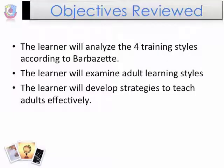Let's review our objectives to verify that we covered all the components desired. We analyzed the four training styles — instructor, explorer, thinker, and guide — and determined that being flexible in each style is key. We talked about learning styles — feeling, watching, thinking, and doing — and how to address each learning style through the five steps to teach adults effectively.